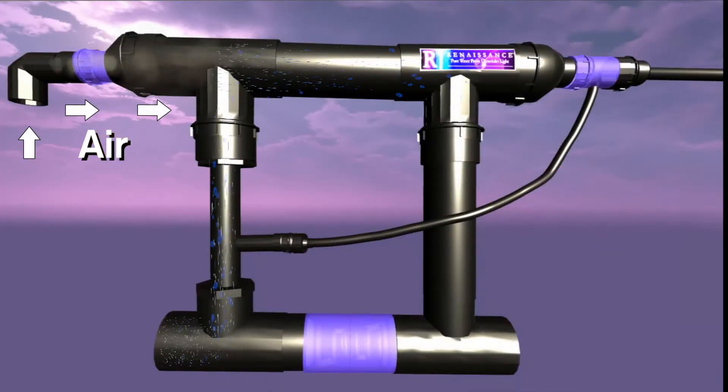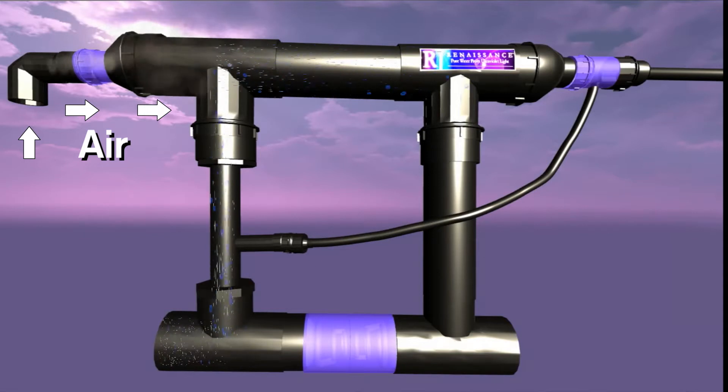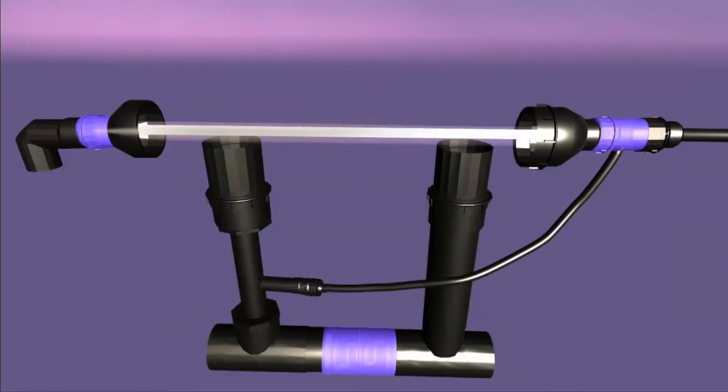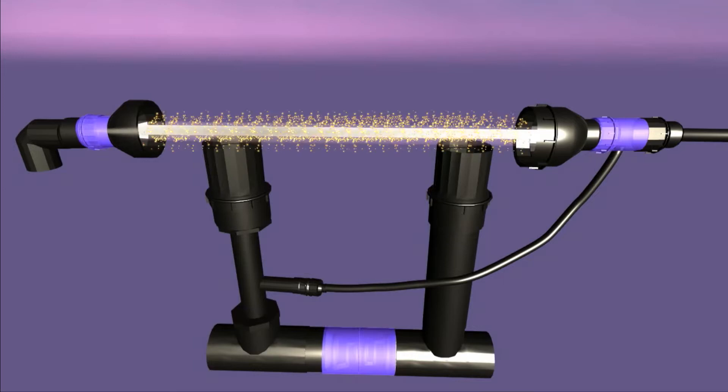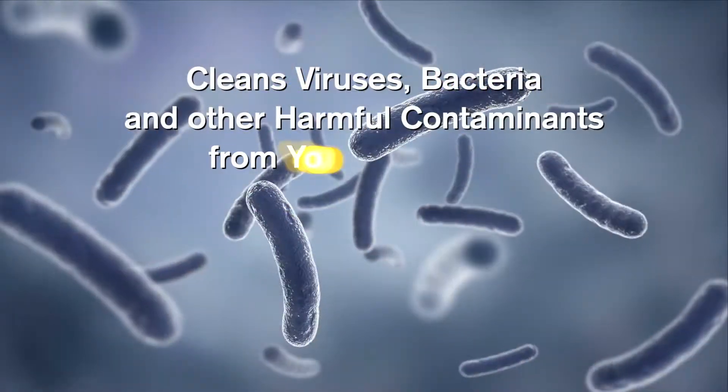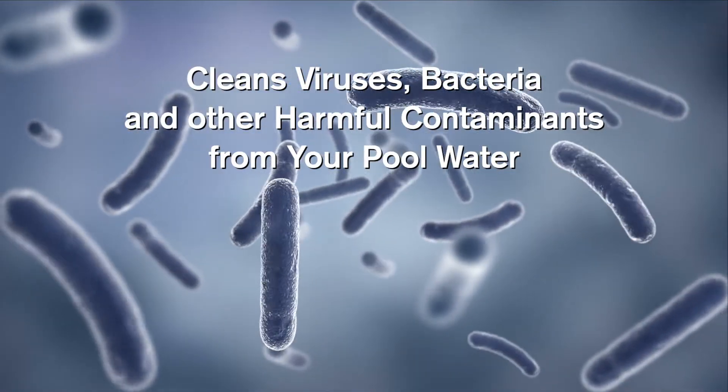The movement of the water through the unit causes air to enter the Renaissance that moves across the ultraviolet lamp. As air moves over this lamp, both ozone and ultraviolet light are generated and enter your pool water and begin to clean it of viruses, bacteria and other harmful contaminants.